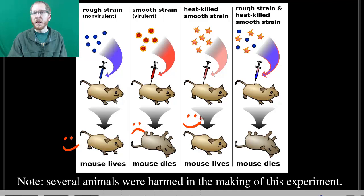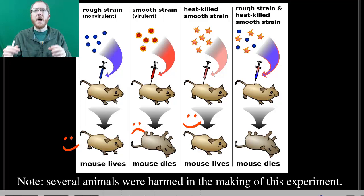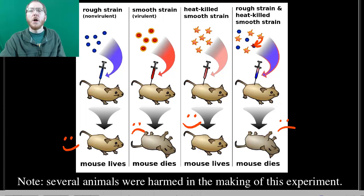But, and I don't know why Griffith decided to do this but it was awesome, he mixed some of the non-lethal bacteria that were alive with some of the remnants of those killed lethal bacteria. At this point, we have naked DNA from the original lethal guys floating around with the non-lethal guys. Some picked up that DNA and became smooth bacteria and killed the mouse. This allowed them to realize the idea of transformation.